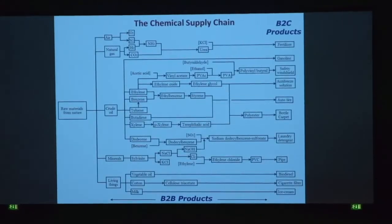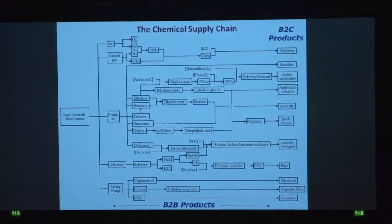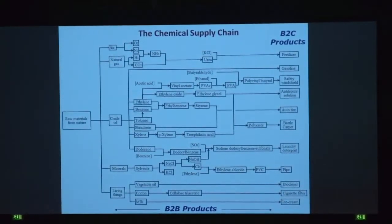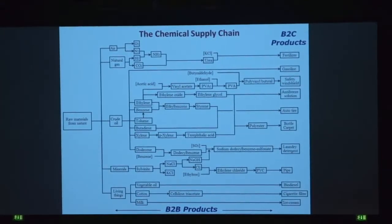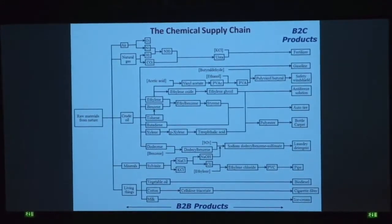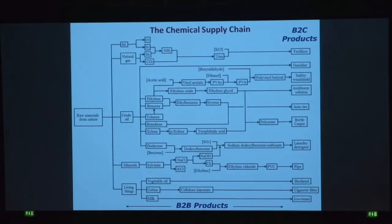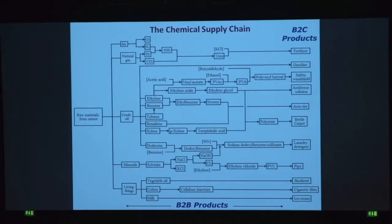The products in the chemical supply chain — there are thousands and thousands of them. They are all derived from nature: water, gas, oil, minerals, and plants and animals. If you look at the middle of the chemical supply chain, we are talking about B2B products selling by one company to another. An example is paraxylene and terephthalic acid to polyester. But there are also many B2C products, where consumers have a large say in what the products should be.